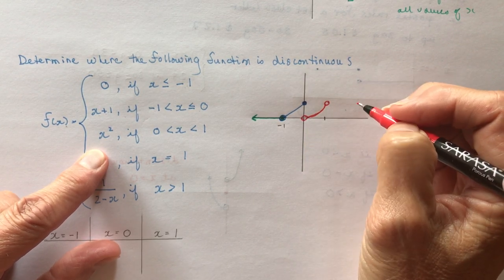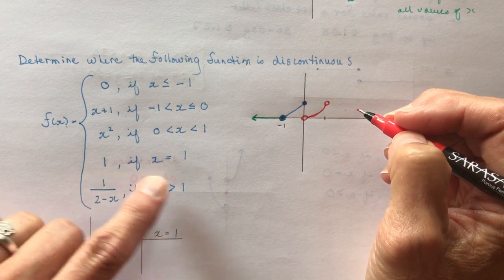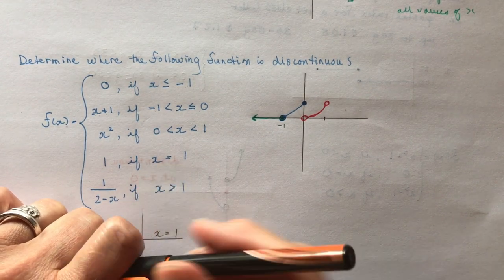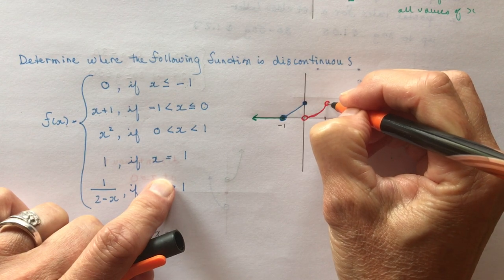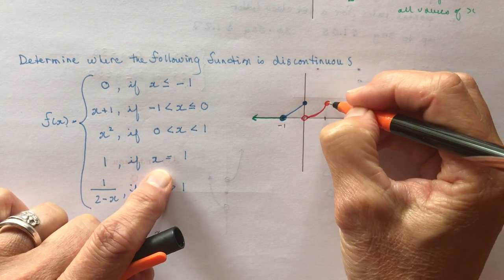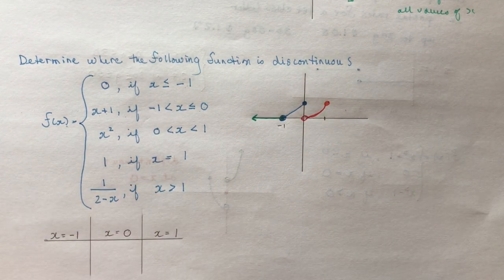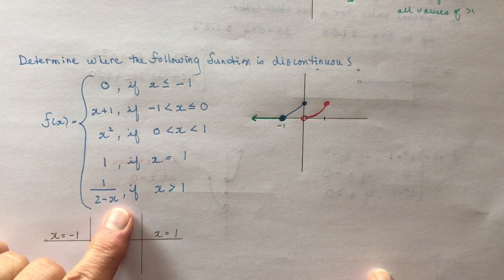The next part says f(x) = 1 if x = 1, which closes in the open circle at (1, 1) — that's just a single dot for that value. So now we can see there's a discontinuous point at x = 0, since the graph jumps from (0, 1) down and then restarts.